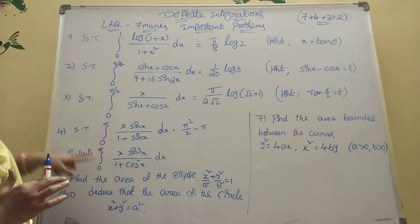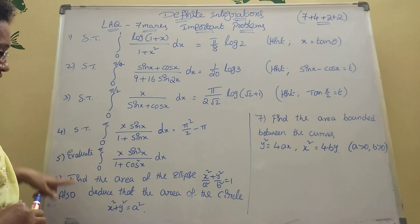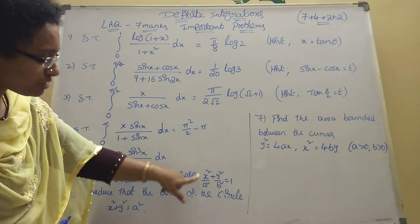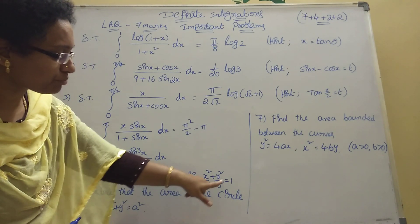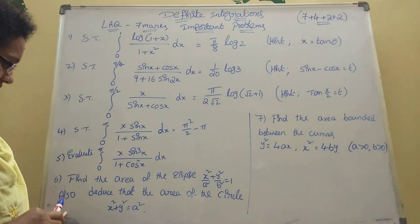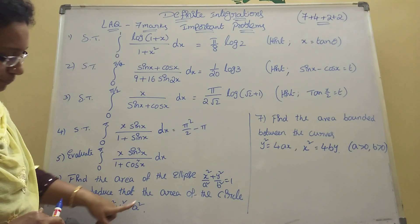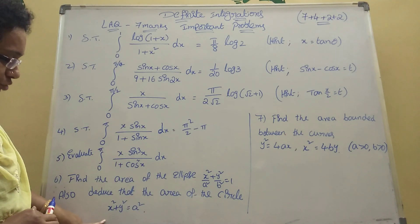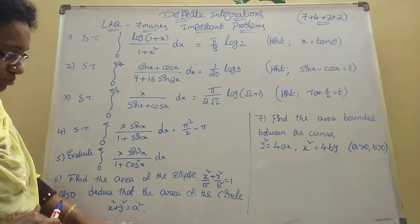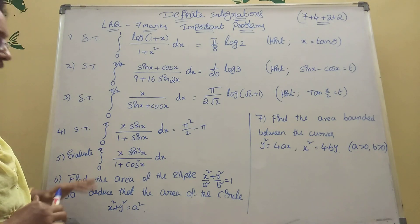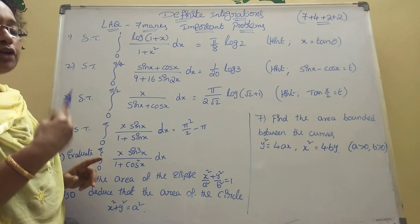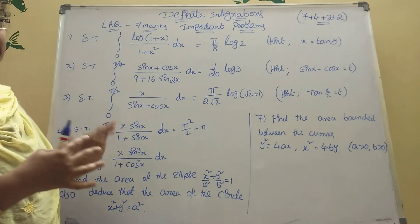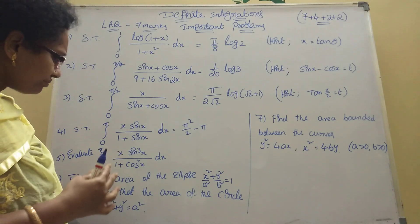Fifth one: find the area of the ellipse x²/a² + y²/b² = 1, and also deduce that the area of the circle x² + y² = a². Both should be proved. These are area sums — two area sums are there for seven marks, and I will also explain the four-mark area formula sums.